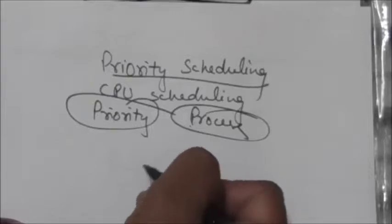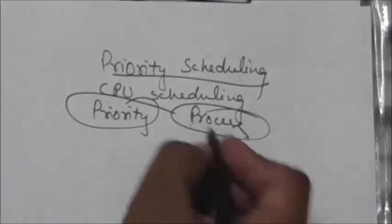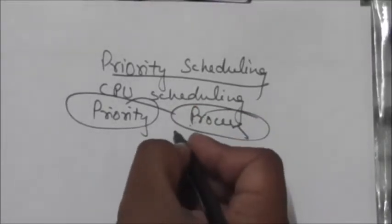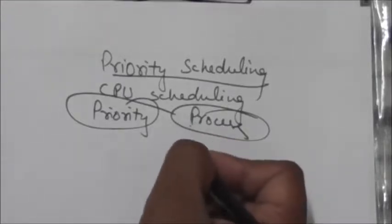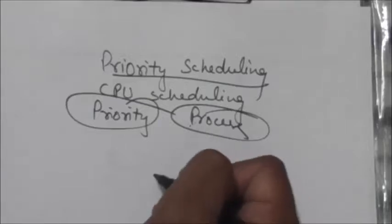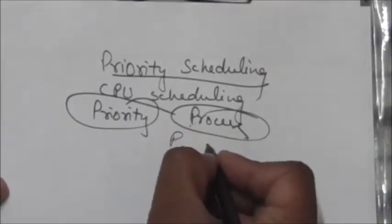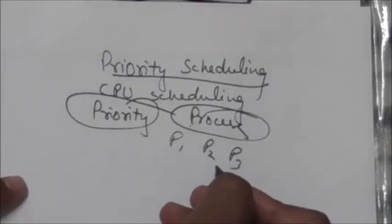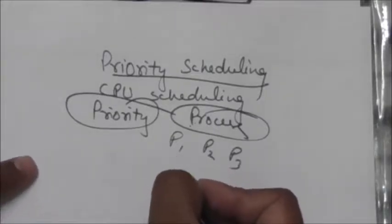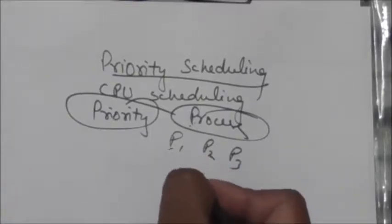Suppose there are more than one processes having the same priority — what happens in that case? The process which has requested the CPU first will be allocated the CPU first. For example, if P1, P2, and P3 have the same priority, the CPU will be allocated to whichever process made the CPU request first.